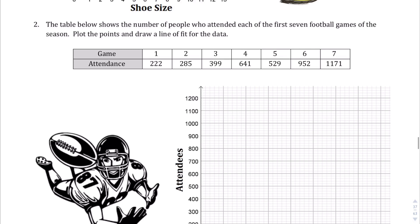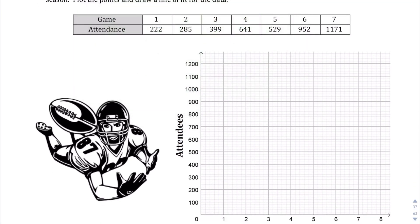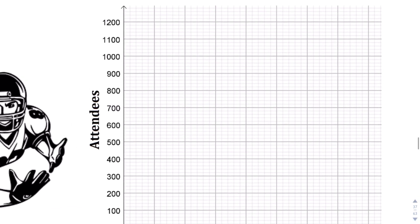Let's jump forward to question number two, which we're going to do the same thing. This one is about football games and attendance. They've taken data for the first seven football games of the season. The first game had 222 people. I'm going to zoom in so you won't be able to see it on the screen, but it'll be on that page with you. Game one, we're at 222, maybe somewhere around here. Again, no need to be perfect. Second game, 285, almost at 300. At three, we're at 399. Game four, 641. Game five, 529. Game six, 952, about halfway between 900 and 1,000. Game seven, we're at 1171.